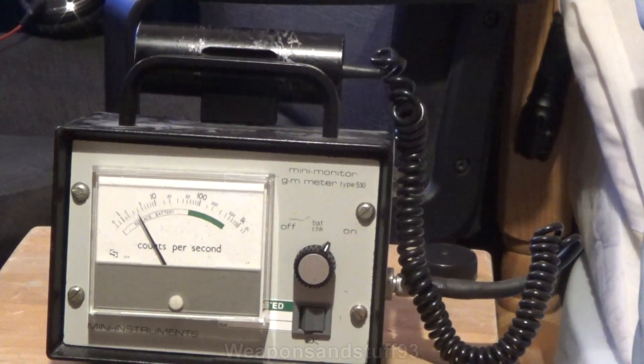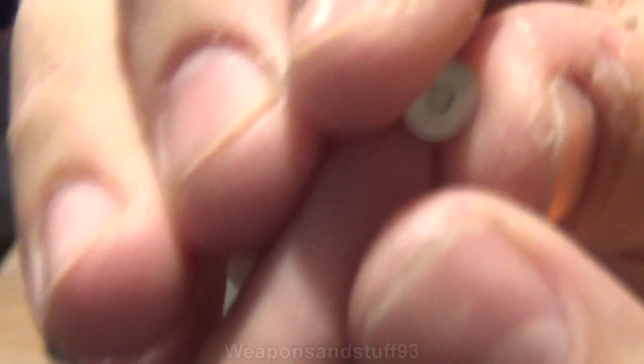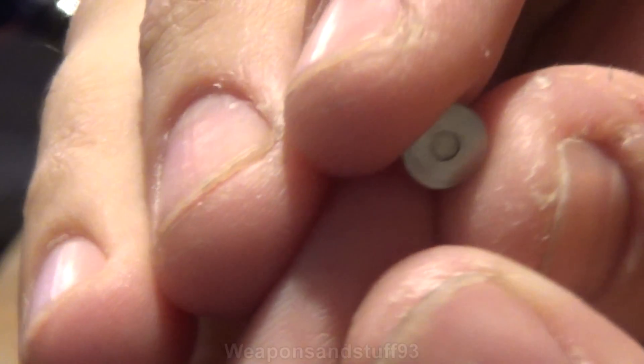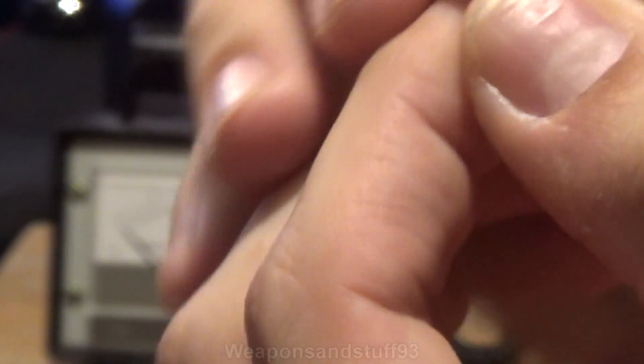Now, here's a very interesting one. The americium from a smoke alarm. This is going to be very hard to show on the camera because it's so small. But this is the side of the americium, that bit there. And that's nearly all alpha radiation. A bit of beta comes off of it. And that's the backside.